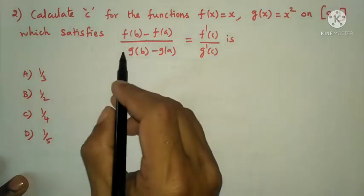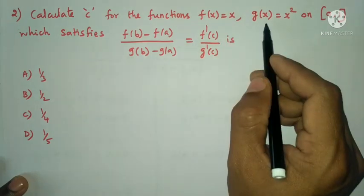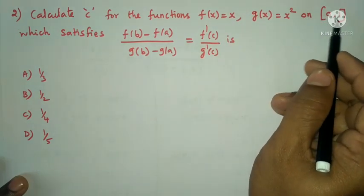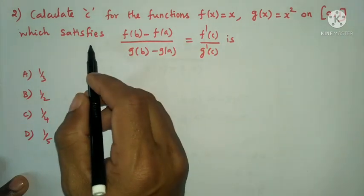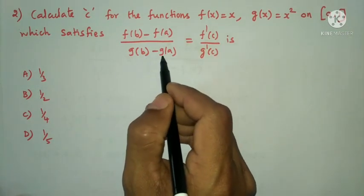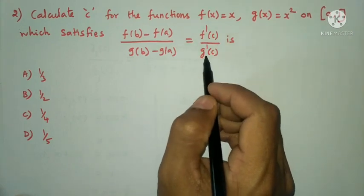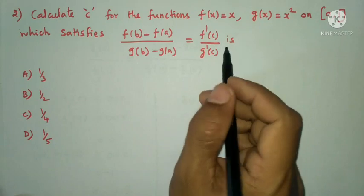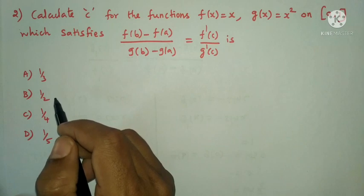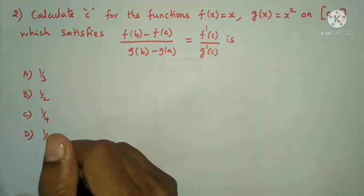Next question: Calculate c for the functions f(x) = x and g(x) = x² on the closed interval [0, 1], which satisfies f(b) minus f(a) divided by g(b) minus g(a) equal to f'(c) divided by g'(c). Options: A) 1/3, B) 1/2, C) 1/4, D) 1/5.